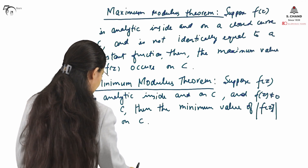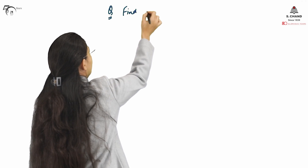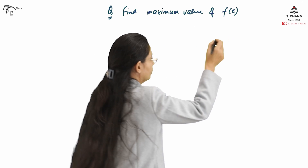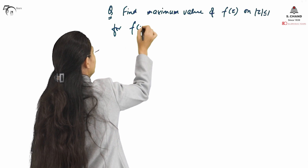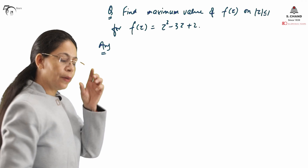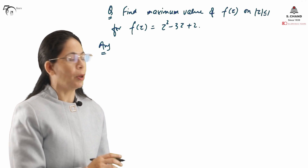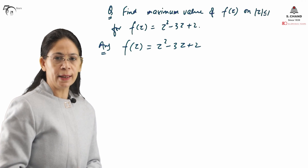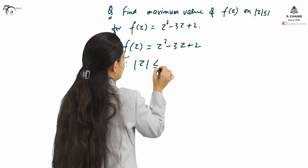First we will take an example for the Maximum Modulus Theorem. Find the maximum value of F(z) on mod of z less than or equal to 1, where F(z) = z² − 3z + 2. First of all, we need to find out whether the given function is analytic or not, because to apply the Maximum Modulus Theorem we need to verify analyticity. Since F(z) = z² − 3z + 2 is a polynomial in z, it is analytic inside and on the closed curve C, where C is given as mod of z ≤ 1.